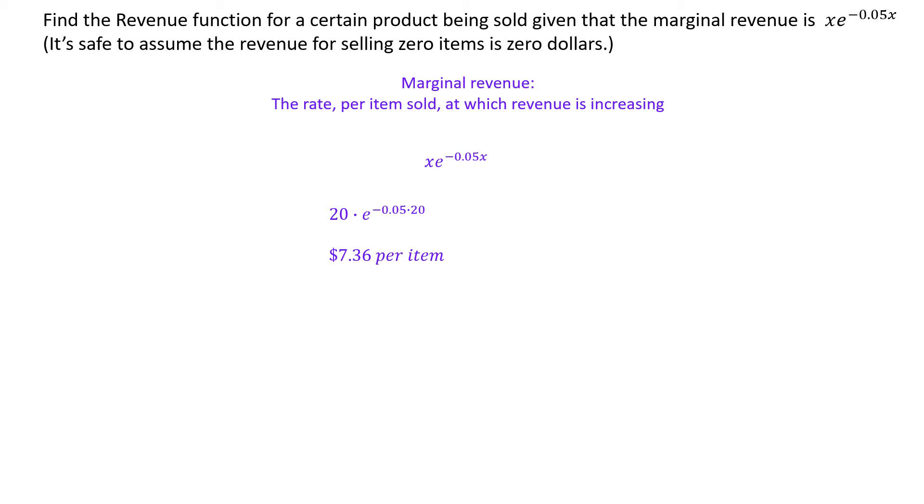One way you can think of this is the price that you would get for the 21st item that you sold, in the sense that if your revenue is changing at $7.36 per item at the 20 item sales level, that would mean the 21st item you sold, you would get that much for it. Another example, if we plug 30 in, we get a different number here, $6.69 per item.